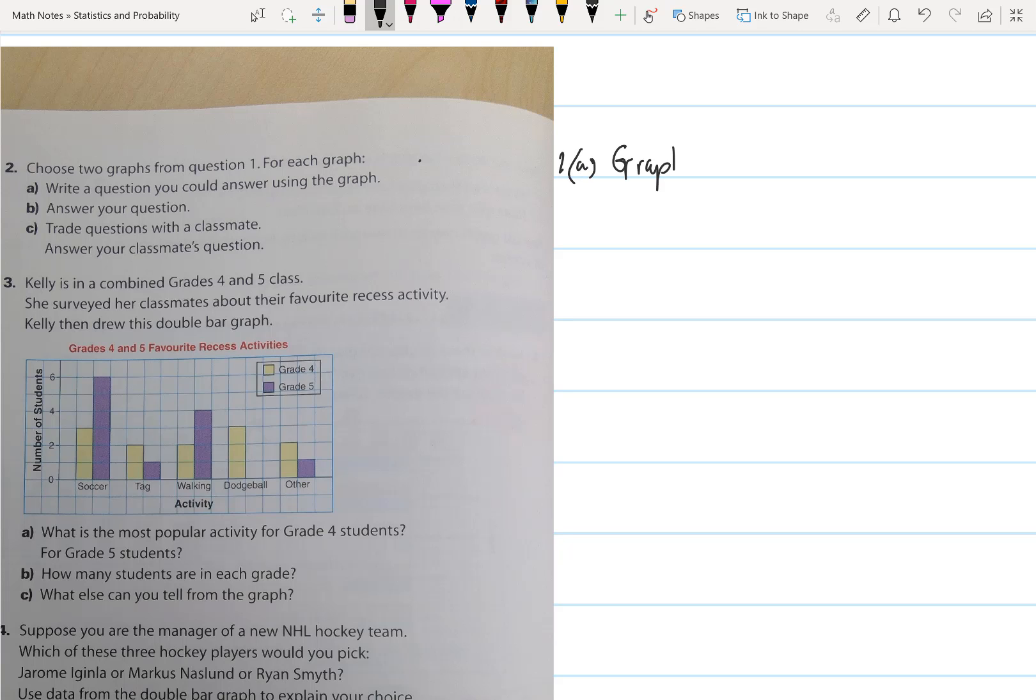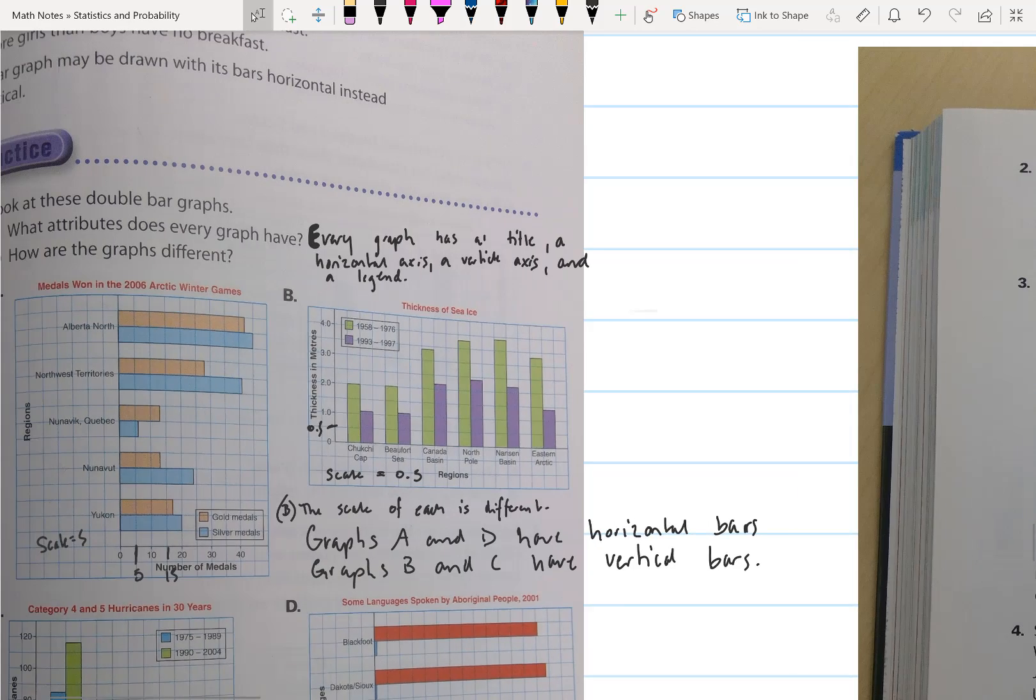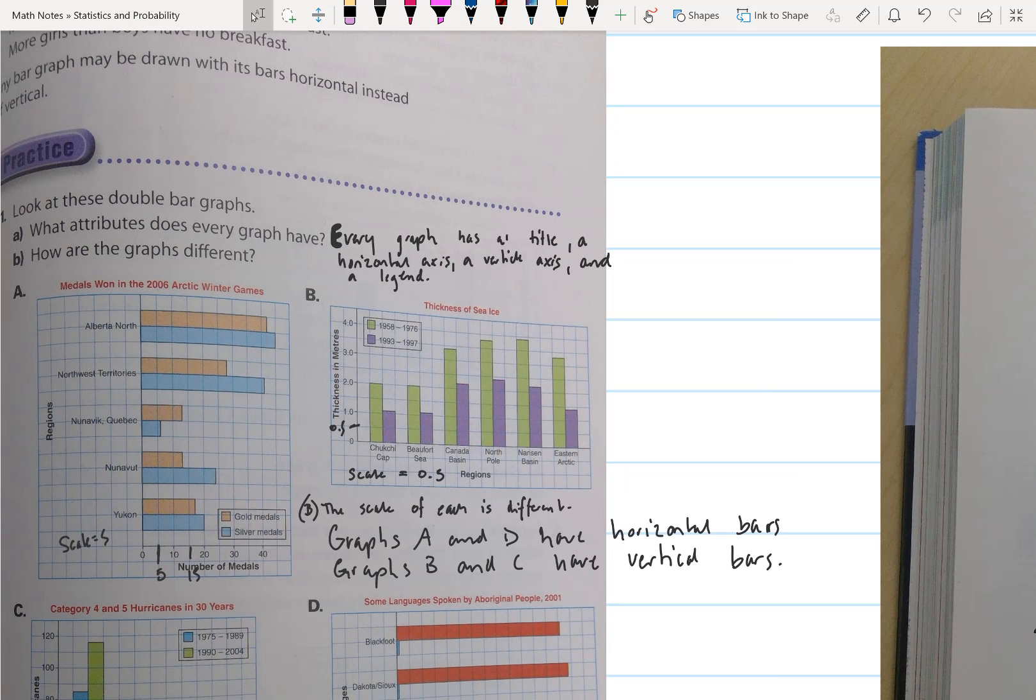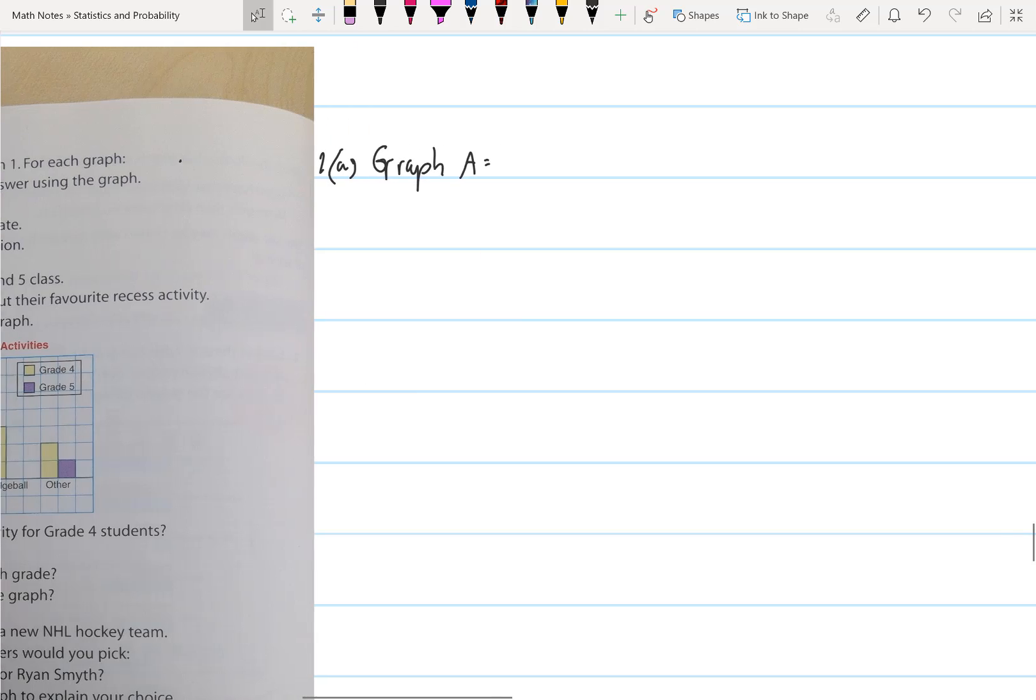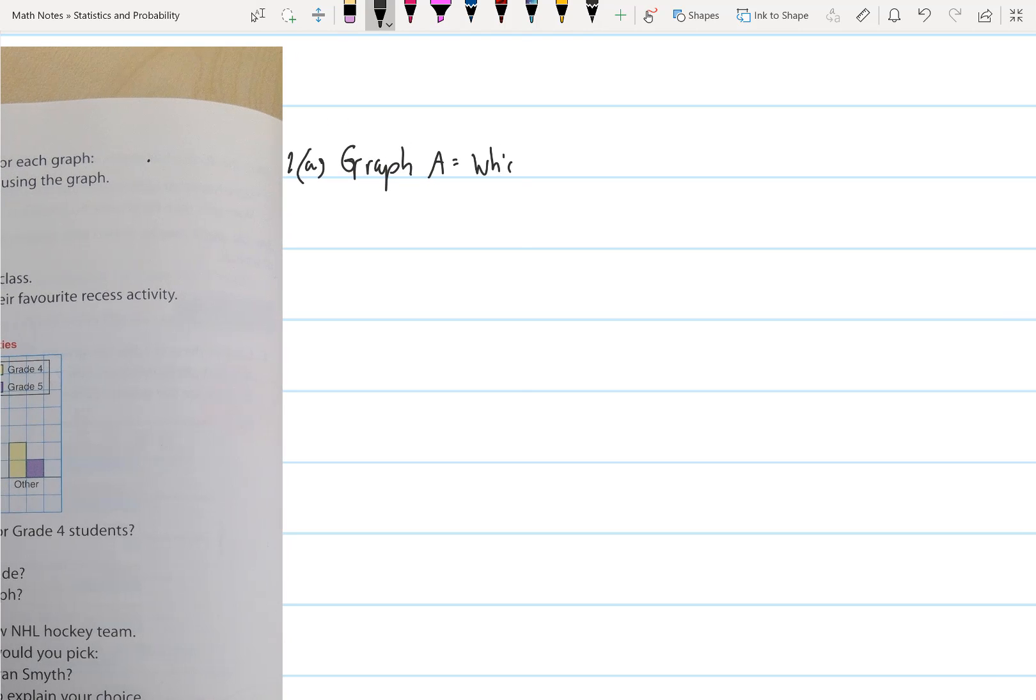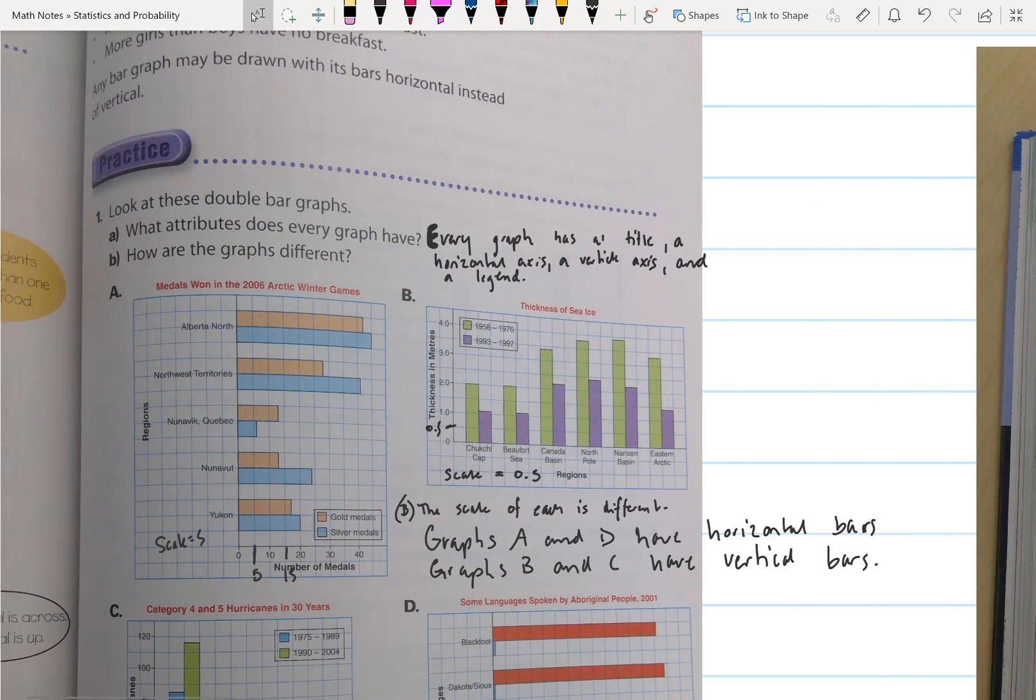For graph A, a question that I could ask - looking at medals won in the 2006 Arctic Winter Games - I'm going to ask the question which team won more gold medals than silver medals.